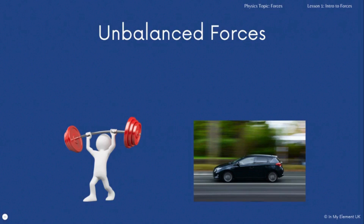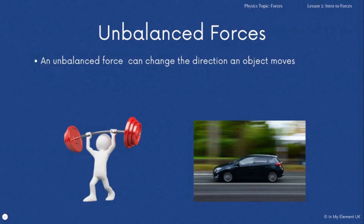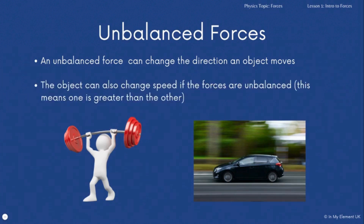Unbalanced forces are a different matter — the speed can be changed and the direction can be changed. If the forces acting are unbalanced, it can change the direction of movement and the speed. One of the forces acting on an object would be greater than the other, which means it will lead to speeding up or slowing down. You need to be able to recognize in images whether forces are balanced or unbalanced, and identify what the overall movement will be.